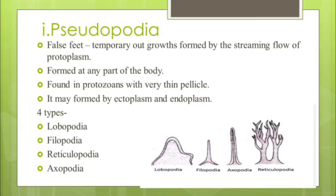The first locomotory organelle we will discuss is pseudopodia. It is a false foot — a temporary outgrowth formed by the streaming or flow of protoplasm. It is formed at any part of the body and is found in protozoans with a very thin pellicle. It may be formed by ectoplasm and endoplasm. There are four different types of pseudopodia: lobopodia, filopodia, axopodia, and reticulopodia.